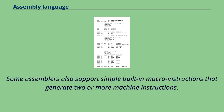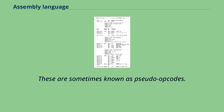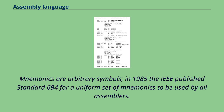Some assemblers also support simple built-in macro instructions that generate two or more machine instructions. For instance, with some Z80 assemblers the instruction LD HL,BC is recognized to generate LD L,C followed by LD H,B. These are sometimes known as pseudo-opcodes. Mnemonics are arbitrary symbols; in 1985 the IEEE published standard 694 for a uniform set of mnemonics to be used by all assemblers, though the standard has since been withdrawn.